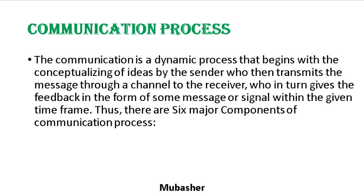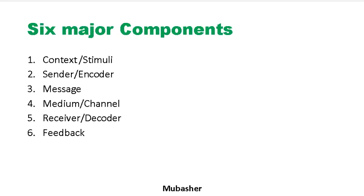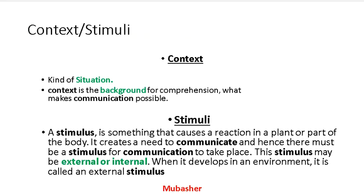There are six major components of the communication process: number one is context or stimulant, number two is sender (also called encoder), number three is message, number four is medium, number five is receiver or decoder, and number six is feedback. Let me introduce all these components one by one.